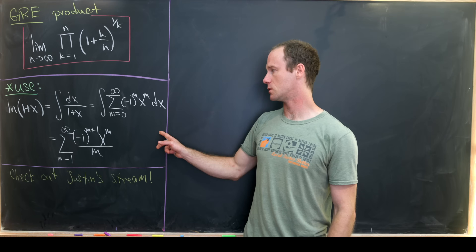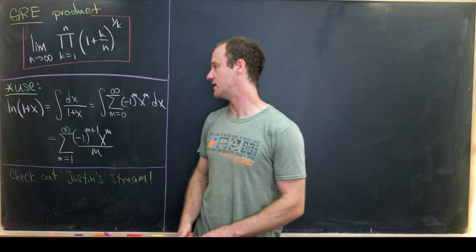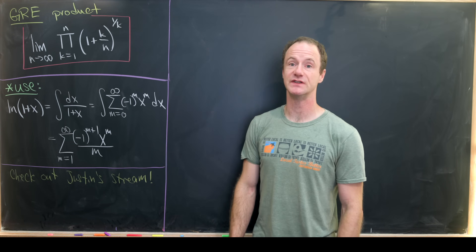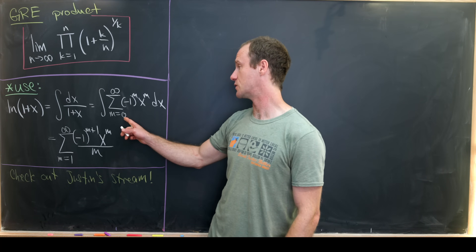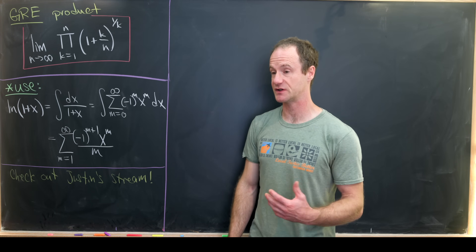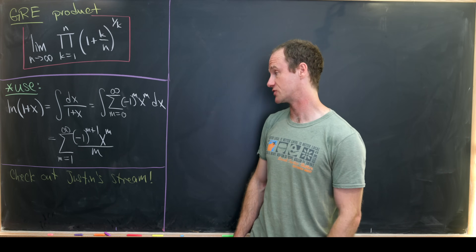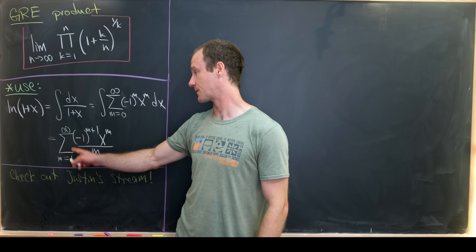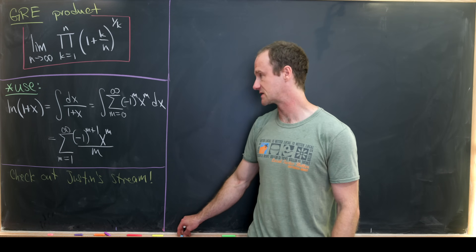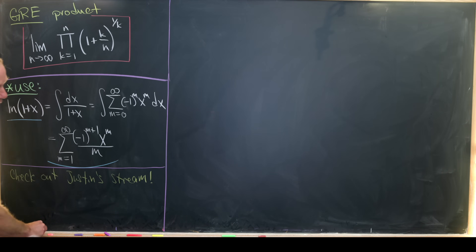We're going to use the following tool: the natural log of 1 plus x, which is the antiderivative of 1/(1+x). We can expand 1/(1+x) using a geometric series — that's the sum as m goes from 0 to infinity of (−1)^m x^m, since the common ratio is negative x. Taking term-by-term antiderivatives leaves us with the sum as m goes from 1 to infinity of (−1)^(m+1) x^m / m, after re-indexing. So the takeaway is we have a nice power series expansion for the natural log.